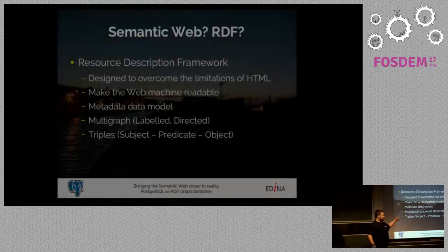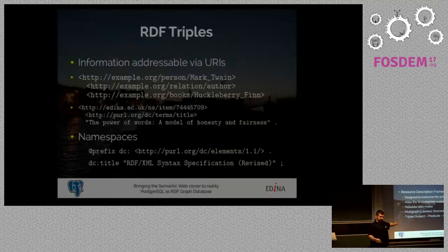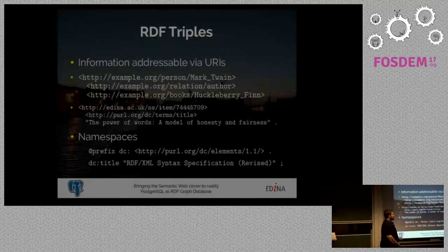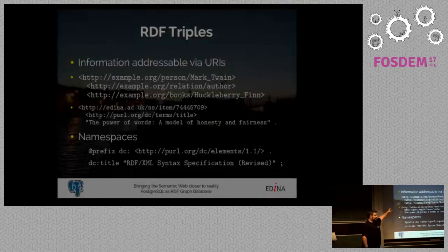Instead of the entity-attribute-value model that we're used to, we've given them fancy names, and now they're called subject, predicate, object in RDF. The subject is the thing that we're talking about. The predicate is the property or action taken by the subject, and the object is the recipient of that property or action. As these are three things, we call them RDF triples.